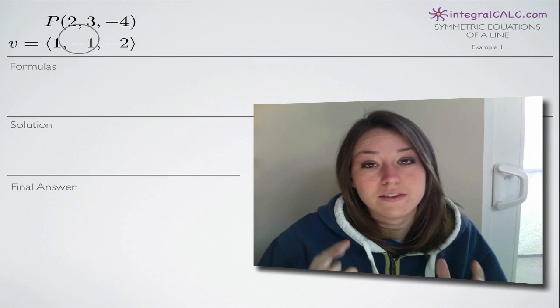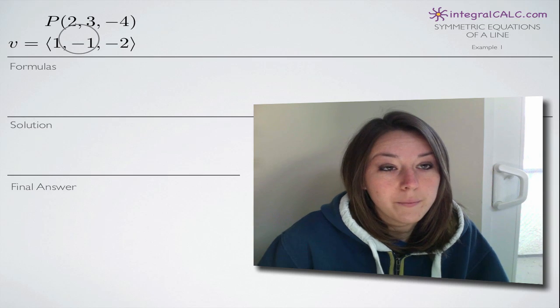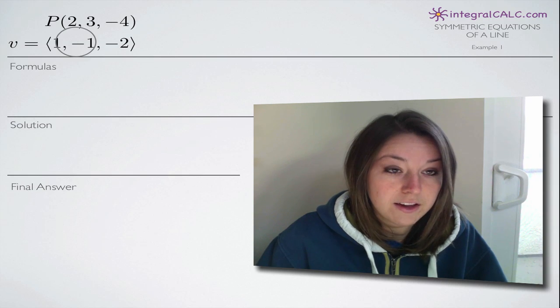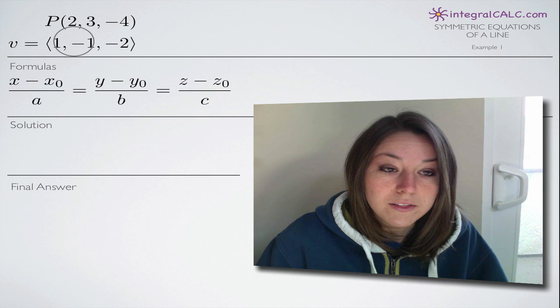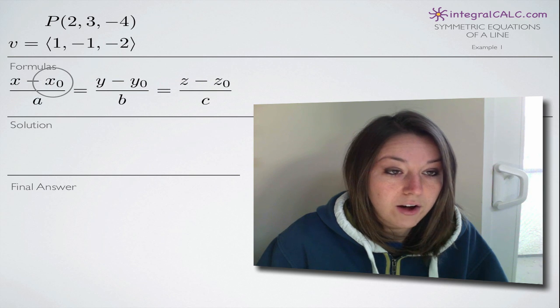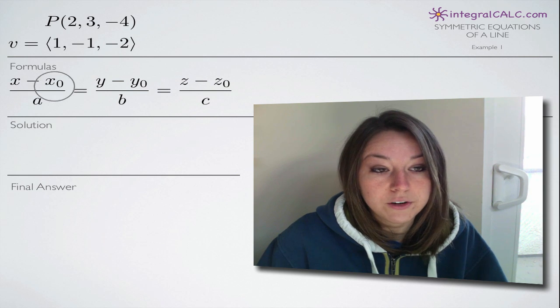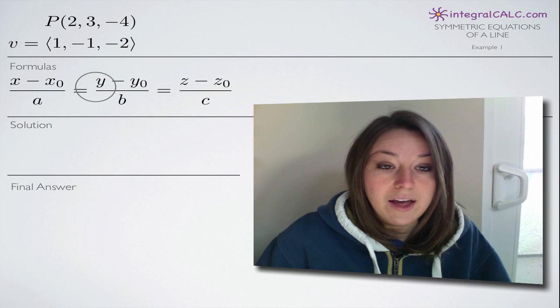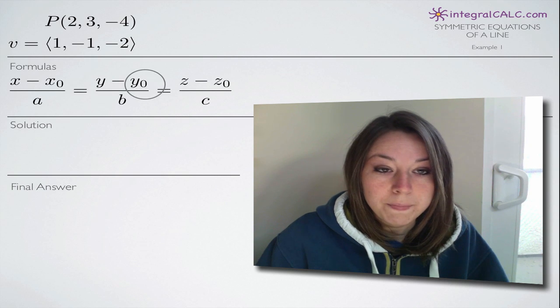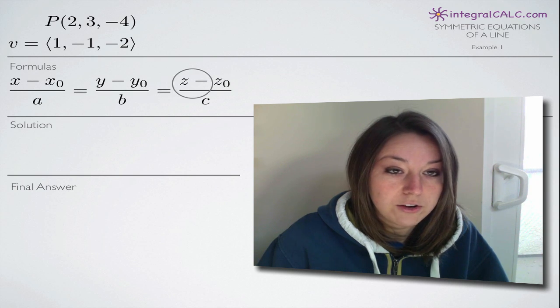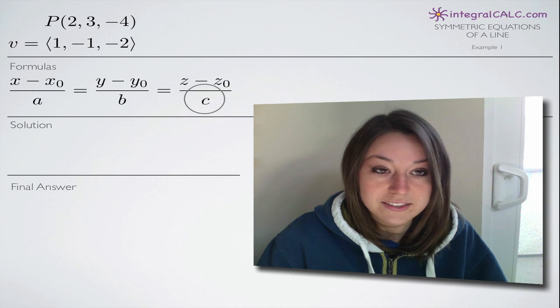The way we're going to do that—this is a fairly easy concept if we have the right information, and in this case we do. The formula we're going to be using is: x minus x sub zero divided by a, and the corresponding formulas for y and z symmetric equations are over b and c.